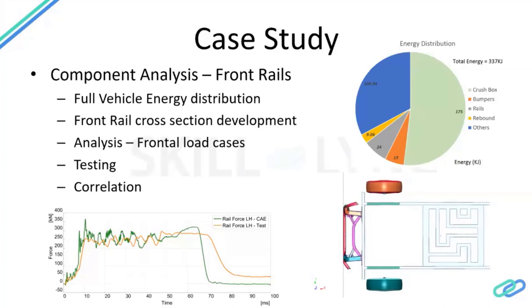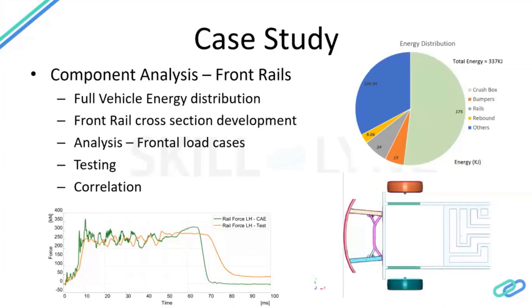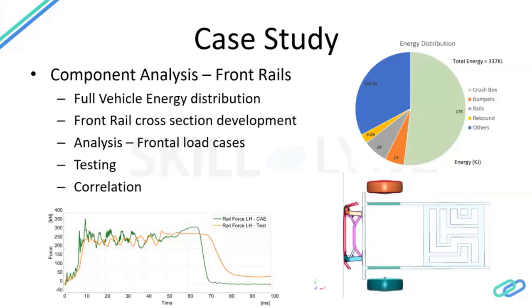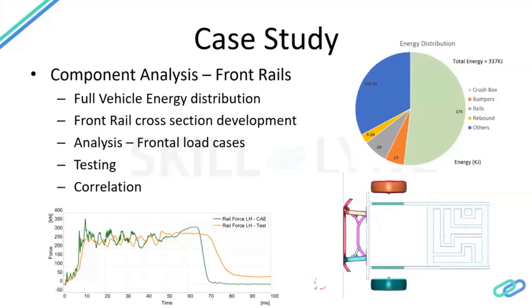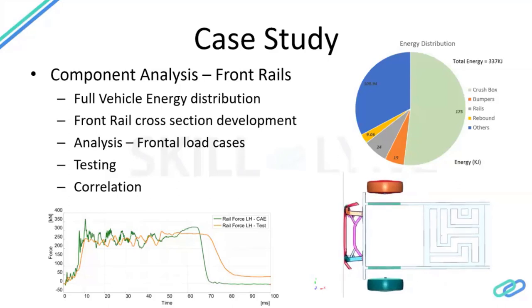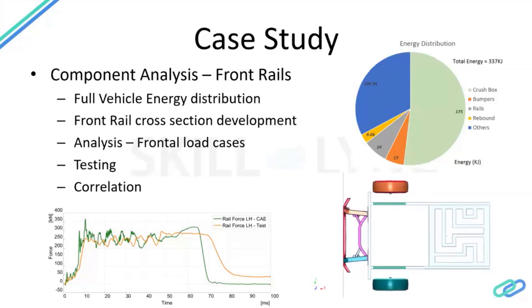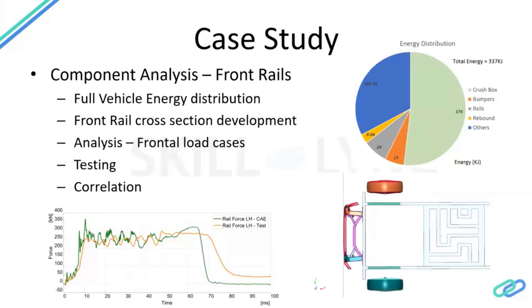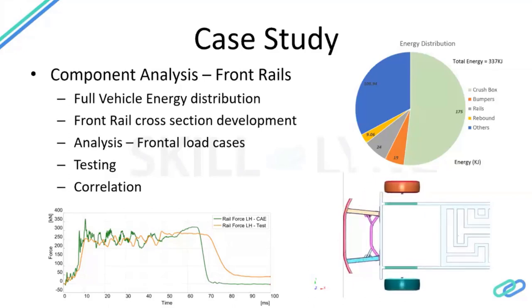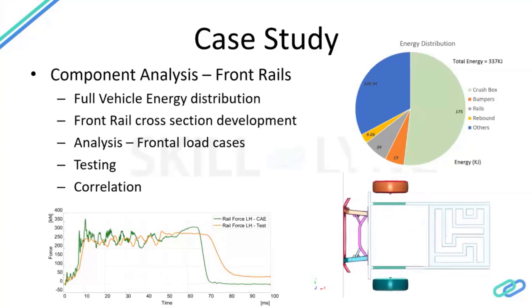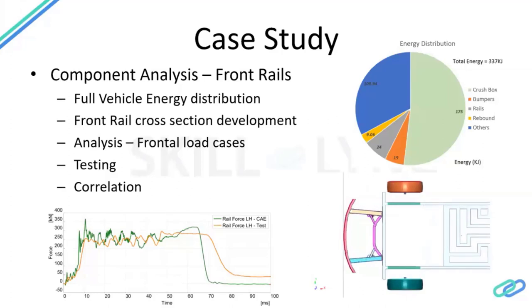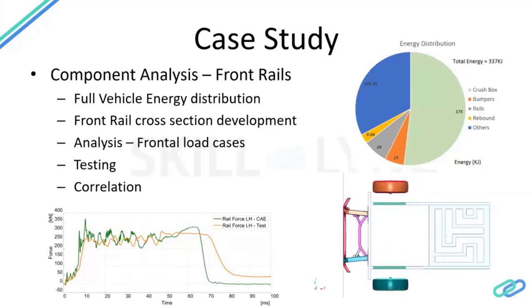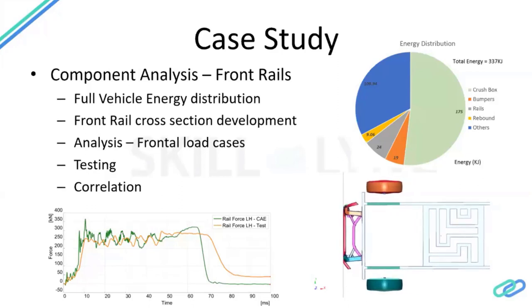The newly designed front rails and bumper beam are taken to a crash testing facility. You get the orange physical test curve, overlay it with your CAE result, and assess how far apart they are. This process repeats until the CAE model closely represents the physical test. If correlation is off, you go back and tweak the model — for example, changing the material model or the weld pattern — until you're close to the physical crash test.